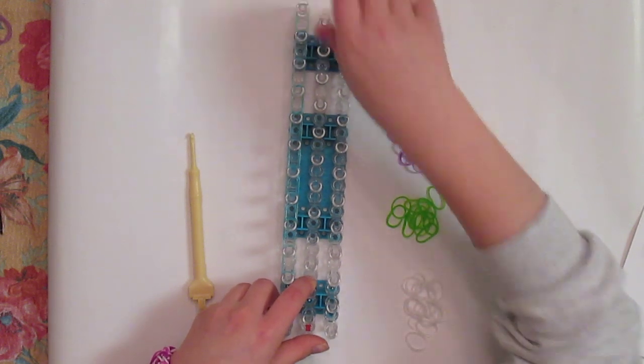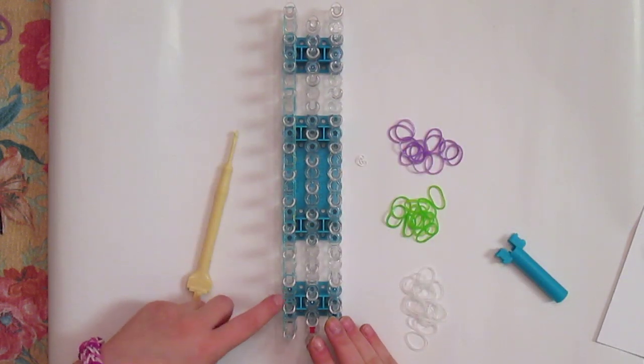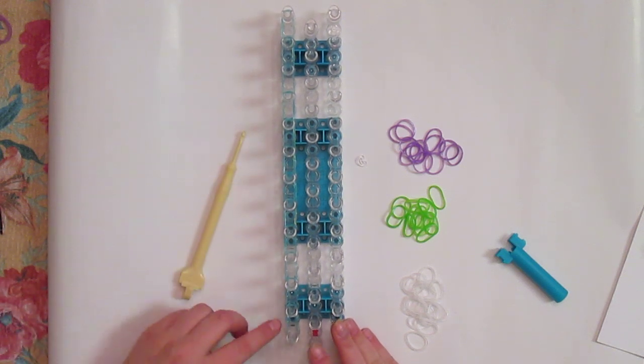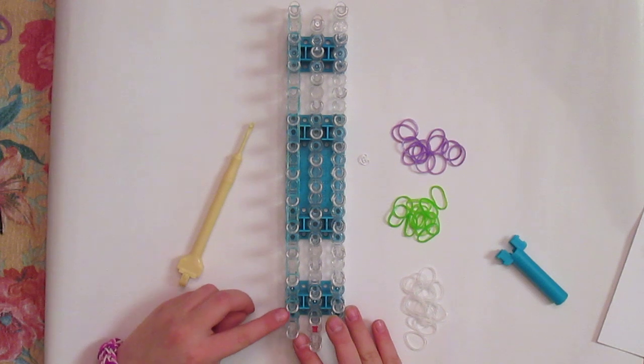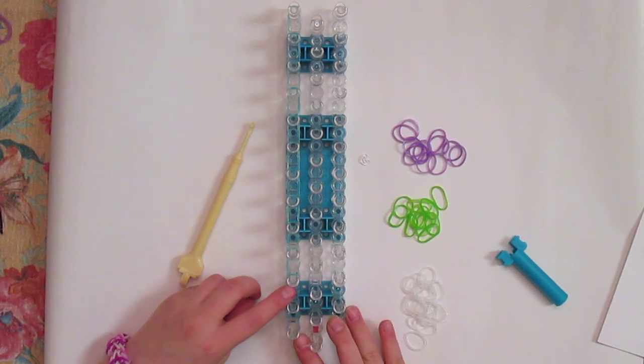This is what your loom should look like when you are done with all 12 teal rubber bands. You would want them to be layered right on top of the other. Like your first rubber band then one right on top of it.